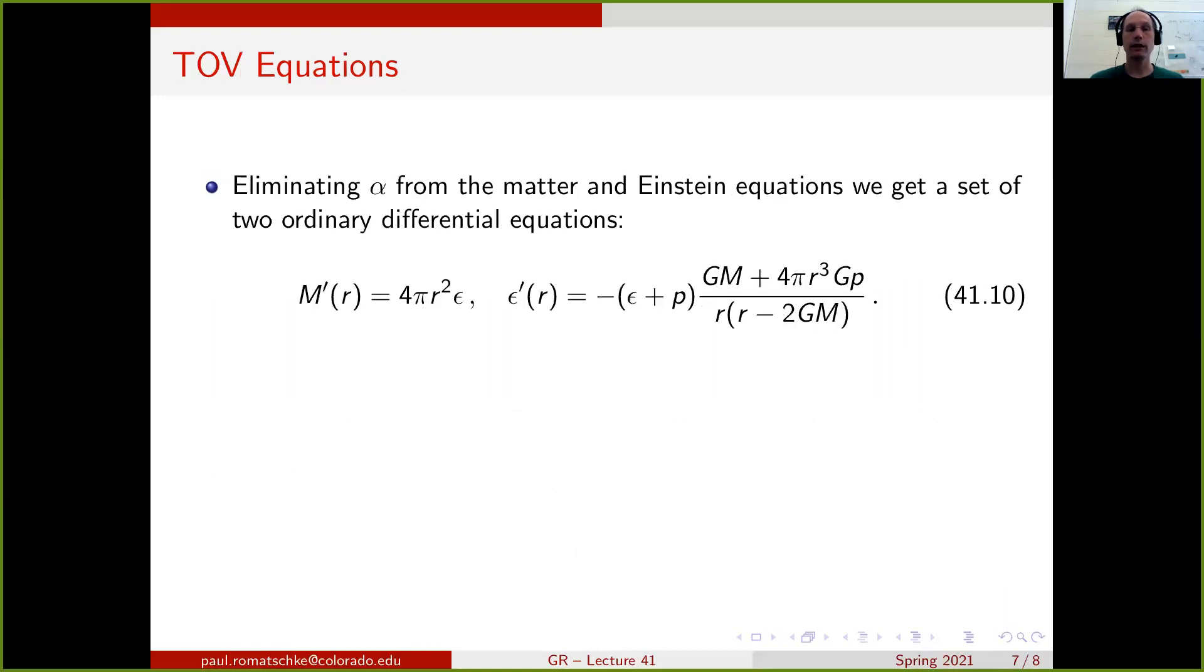So if we eliminate alpha, then we find a set of two coupled differential equations, one for M and one for epsilon, that describes the structure of stars that contain matter in general relativity. These equations are known as the Tolman, Oppenheimer and Volkoff equations, usually abbreviated by the acronym TOV.